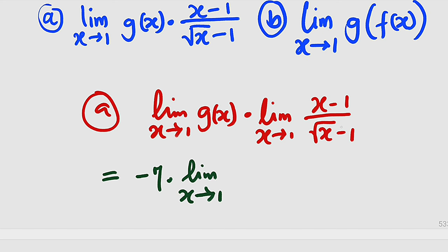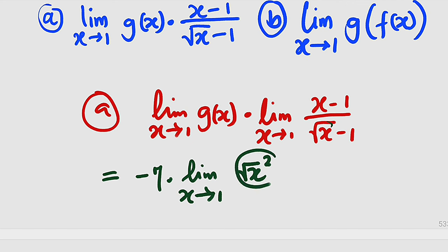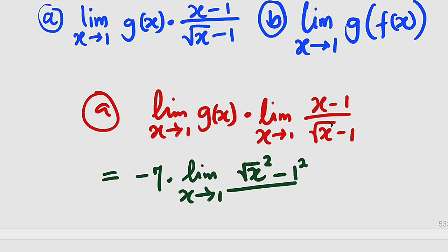Because you cannot directly plug in 1, since square root of 1 will give us 1 and 1 minus 1 is 0, and we don't want our denominator to be equal to 0. So we can rewrite it as square root of x whole squared minus 1, but 1 is also 1 squared. So we have a difference of two squares divided by the square root of x minus 1.